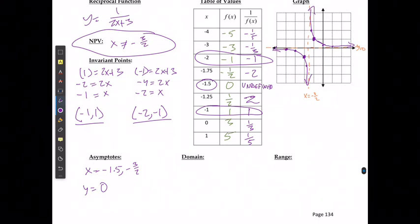What is the domain of this? Well, the domain is represented by x where x can never equal negative 3 over 2 or negative 1.5, and x is an element of all real numbers. The range, which is represented by y, where y can never equal 0, and y is an element of all real numbers.